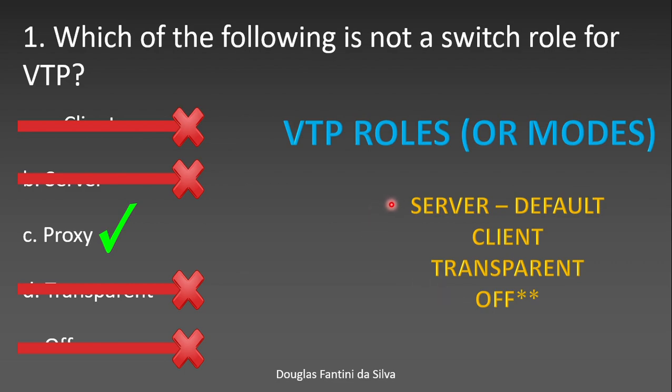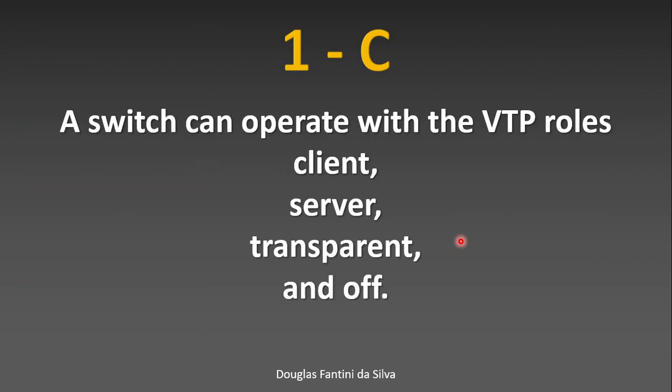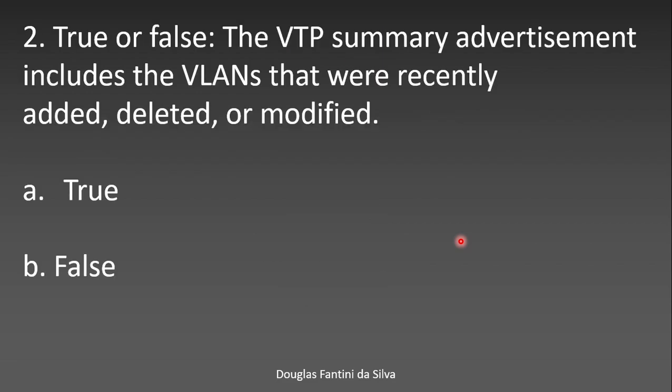VTP roles or modes are: server (the default mode for all switches), client, transparent, and off. Why is server the default? Because you can create, remove, and add VLANs on a single switch. If you are a client, it is because you're joining two switches in the same domain communicating via server-client. Proxy is not a VTP switch role.